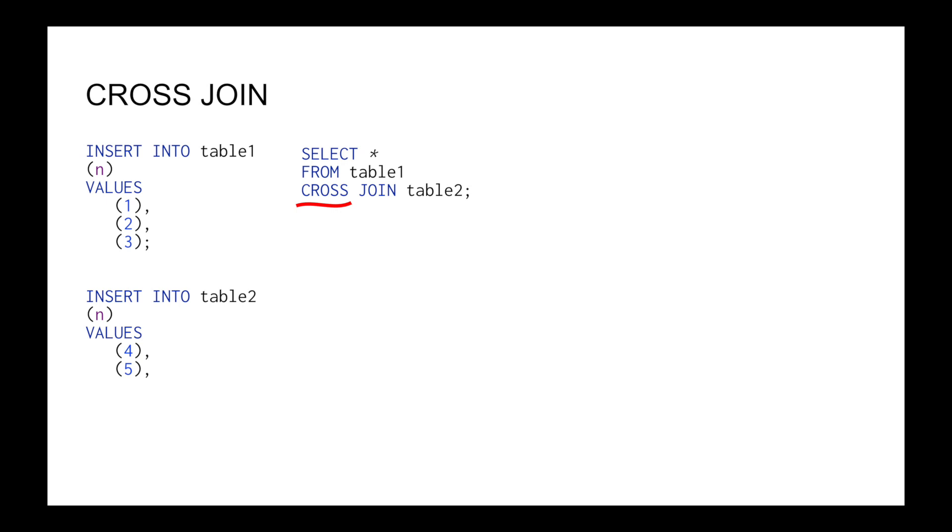Before looking at inner join, let's first look at what a cross join is. This is the basis we need to explain other kinds of joins. Cross join is simply all possible combinations of joining rows of two tables.